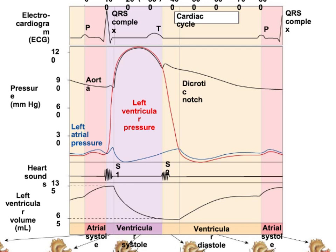What we already looked at: the ventricular pressure, the aortic pressure, and the atrial pressure. We also have the heart sounds, S1 and S2, and ventricular volume.